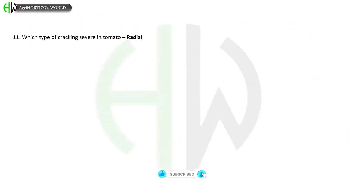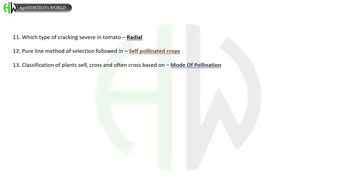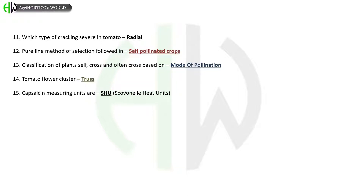Which type of cracking is severe in tomato? Radial. Pure line method of selection is followed in self-pollinated crops. Classification of plants into self, cross, and often cross-pollination is based on mode of pollination. Tomato flower cluster is called a truss. Capsaicin measuring units are SHU — Scoville Heat Units.